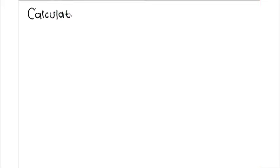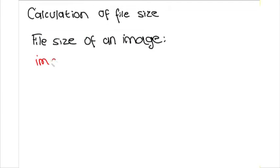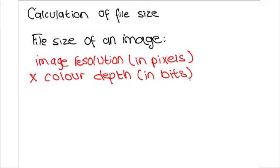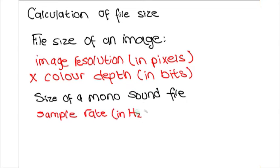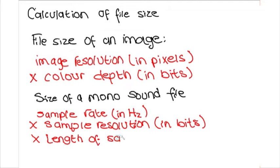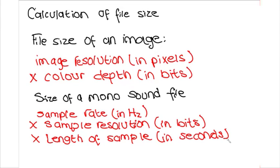Now, let's talk about the calculation of file size. We will look at the calculation of the file size required to hold a bitmap image and a sound sample. The file size of an image is calculated as image resolution in pixels multiplied by color depth in bits. The size of a mono sound file is calculated as sample rate in hertz multiplied by sample resolution in bits multiplied by length of sample in seconds. For a stereo sound file, you would then multiply the result by 2.